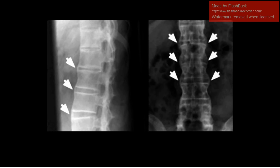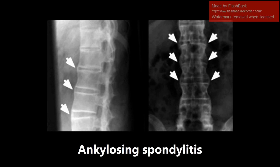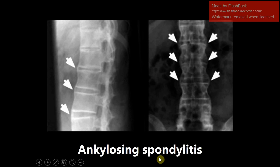This next image is ankylosing spondylitis, also called bamboo spine. You can see in the x-ray that the spine has started to fuse, giving the appearance of bamboo. One other thing really associated with this is HLA-B27, which is associated with all of the seronegative spondyloarthropathies. Ankylosing spondylitis is one of those, but HLA-B27 is most associated with this condition specifically. If you ever see HLA-B27 on an exam, the first thing to think about is ankylosing spondylitis.